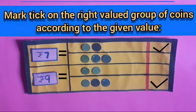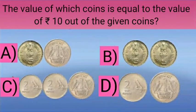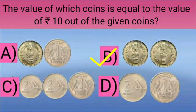Children, we have learnt to take the right valued group of coins according to the given value. Now we will solve a related question: the value of which coins is equal to the value of rupees 10 out of the given coins? The value of option B coins is equal to the value of rupees 10. The right answer is option B.